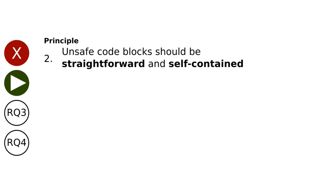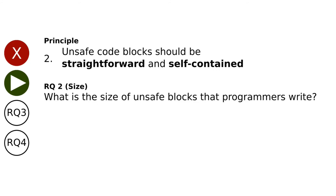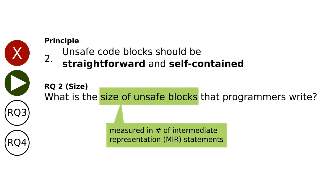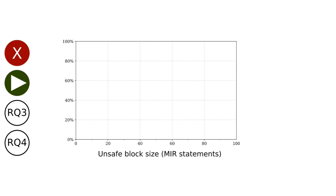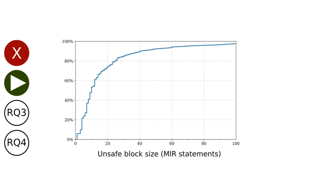The first question was Boolean — either a particular crate uses unsafe or not. Since the second principle claims that unsafe blocks should be straightforward, a natural follow-up question is: what is the size of unsafe blocks that programmers write? We chose to measure the size of unsafe blocks in terms of statements in the intermediate compiler representation called MIR, because this metric is less dependent on programming style. On the x-axis we put the unsafe block size in MIR statements, capped at 100 to improve readability.